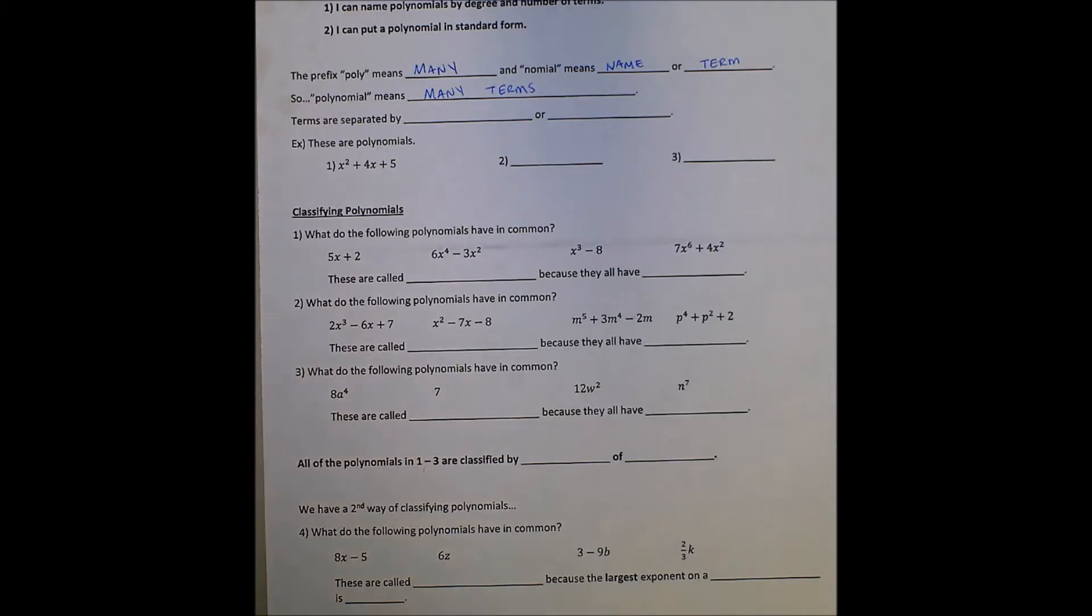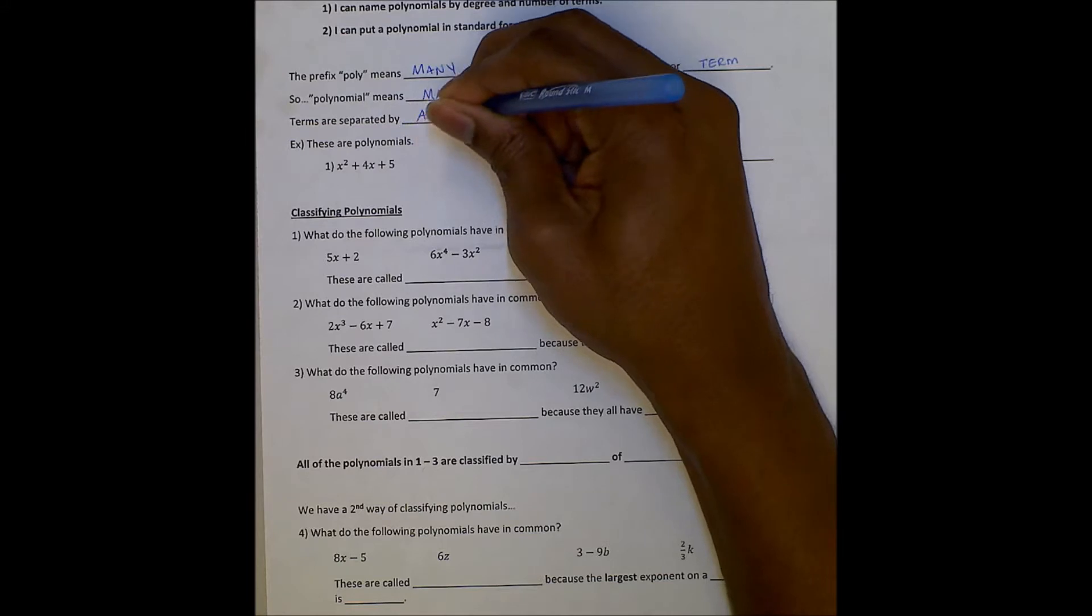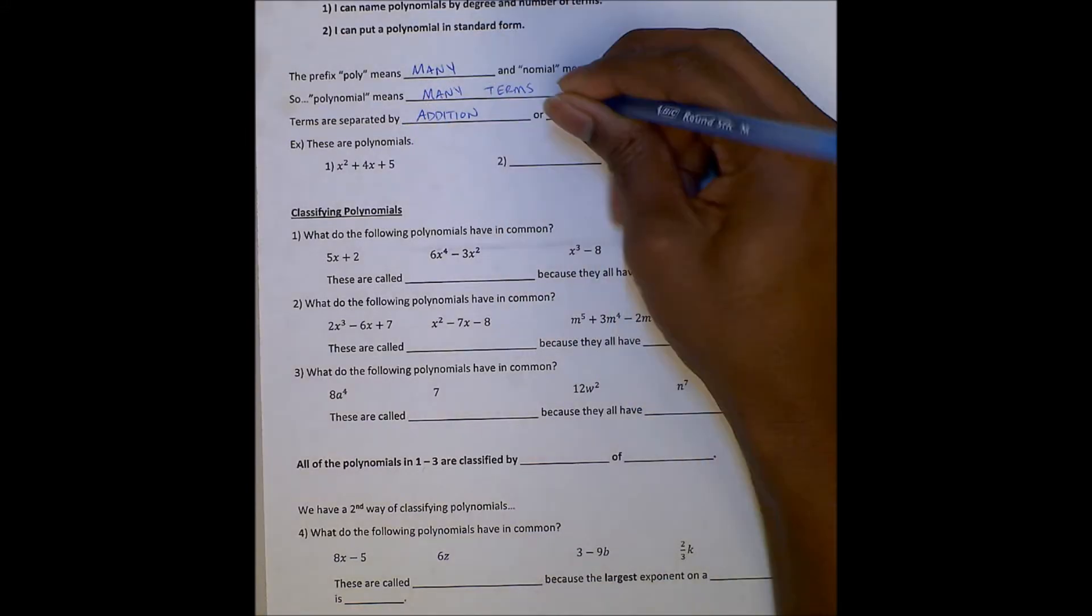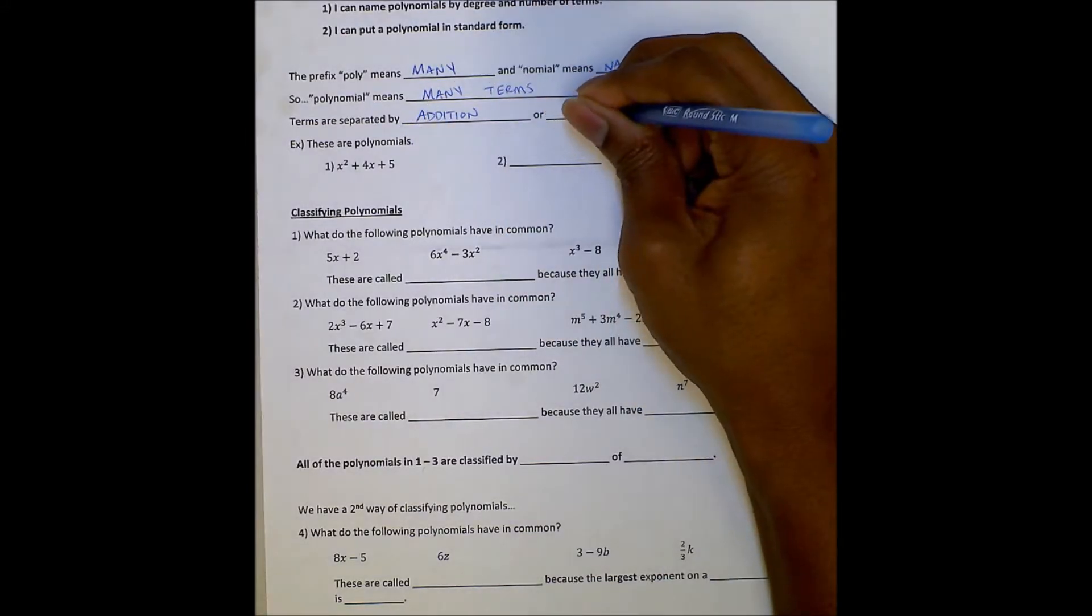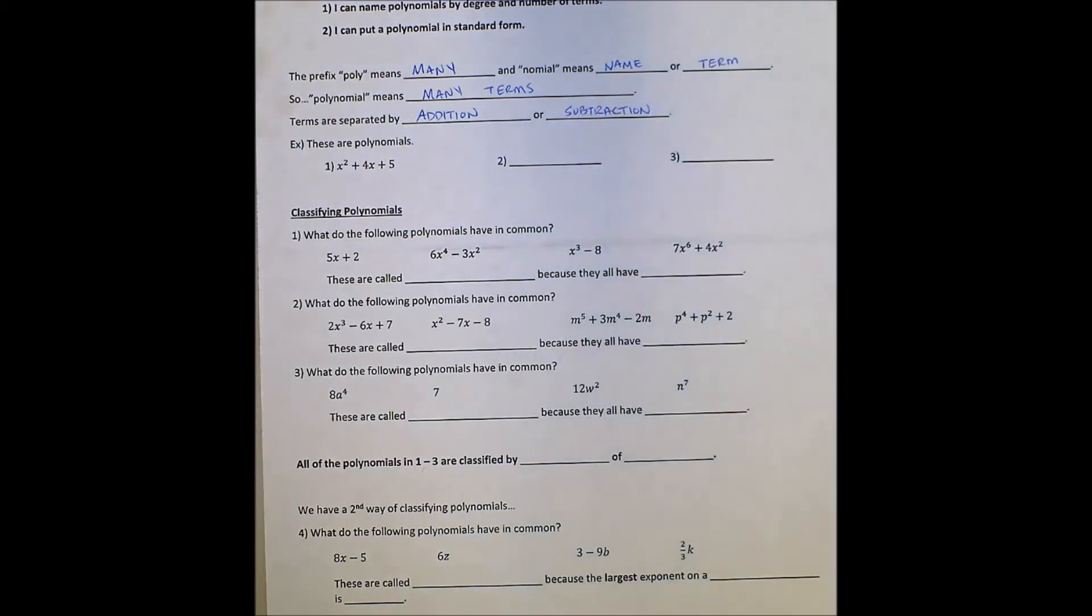Terms are separated by addition and subtraction. Let's start there. We can tell there's a polynomial when we have addition and subtraction. Let's look at some examples here.